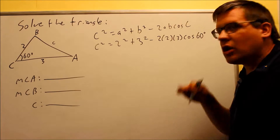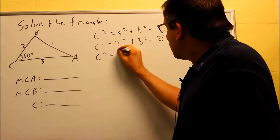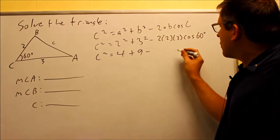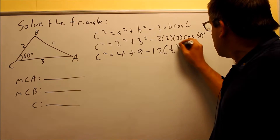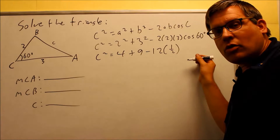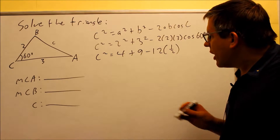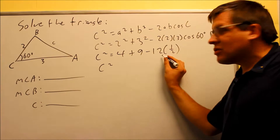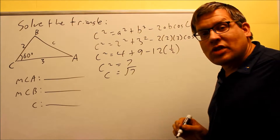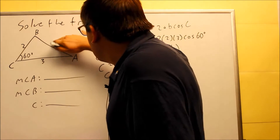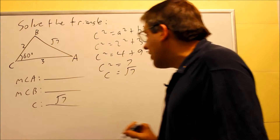Now we work this out and solve for side c. We have c squared equals 4 plus 9 minus 2 times 2 times 3, which gives us 12. Cosine 60 is a special value — one half — from our unit circle. So we get 13 minus 6, which is 7. Taking the square root of both sides gives us c equals the square root of 7. So now we know all three sides, including square root of 7.